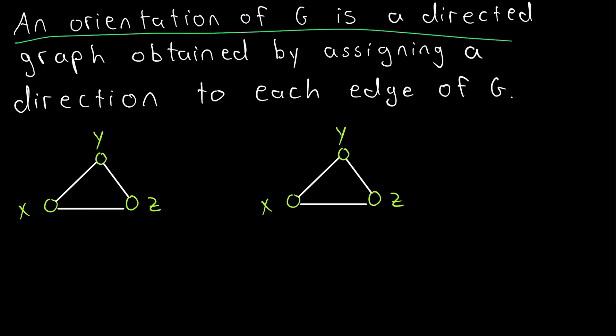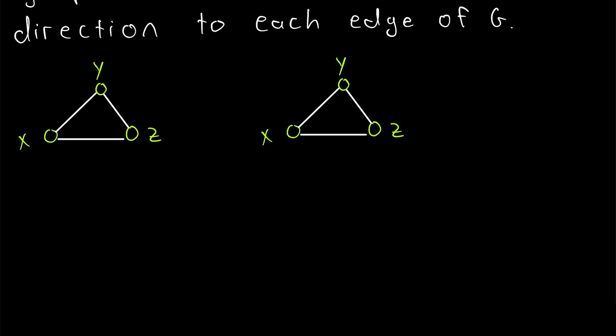And remember, just taking a look back up at our definition, we can obtain an orientation of a graph by assigning a direction to each edge of the graph. So let's go ahead and do that. We could say that this edge joining X and Y has that direction. This edge from Y to Z has that direction.